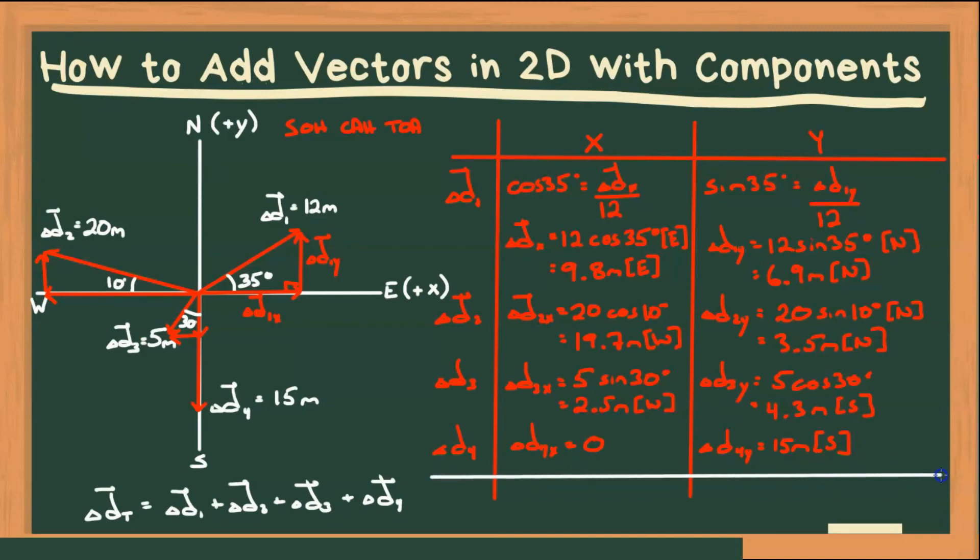So our next step is to find that total displacement. We can't find the total yet, but what I can do is add all of our X components to find what that total displacement is in X. And I can add all of our Y components to find out what that total displacement is in Y. But you do want to be careful with the directions because this is east, west, west. So you don't want to just add those numbers.